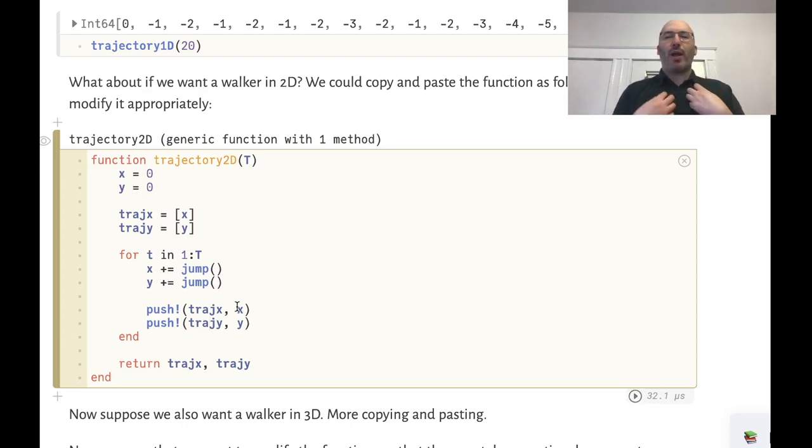It feels like we as human beings are doing this work of manually copying and modifying something that the computer should actually be able to do for us. So how can we actually write a generic version of this code that works for a walker in any number of dimensions or at least one and two dimensions?